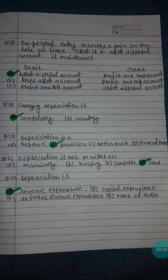Question: Depreciation is not provided on Option A - Machinery, Option B - Building, Option C - Computer, Option D - Land. Land is the correct answer.